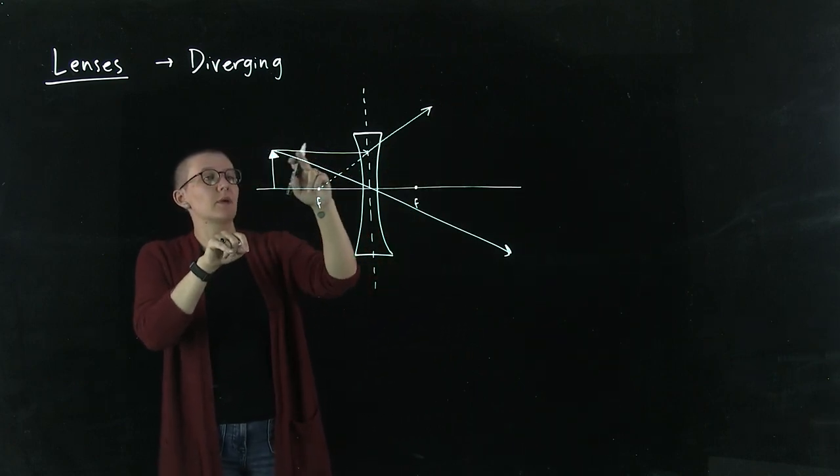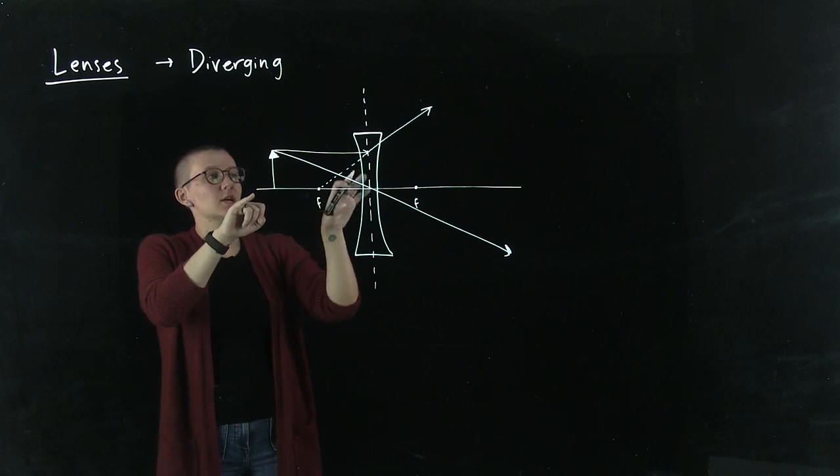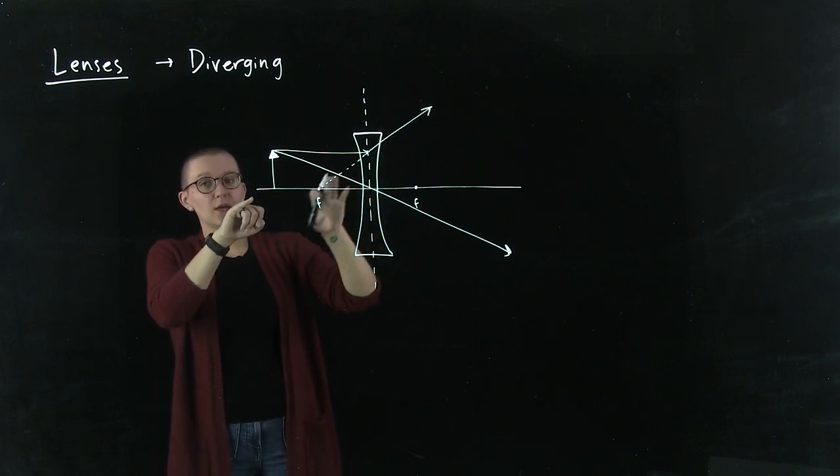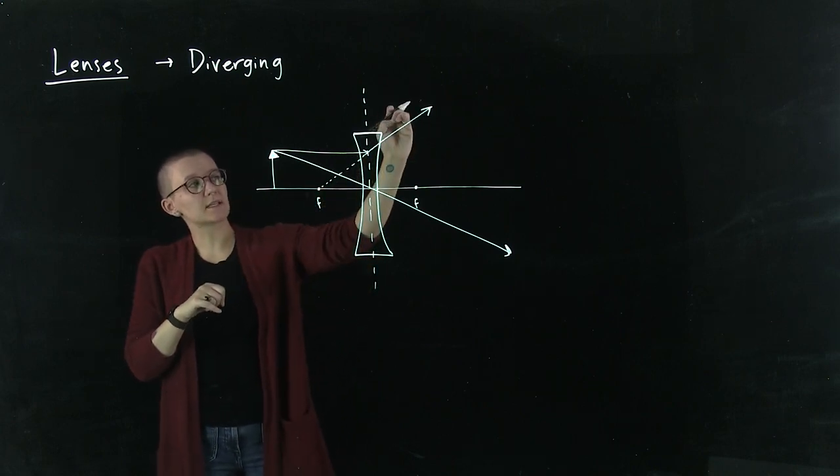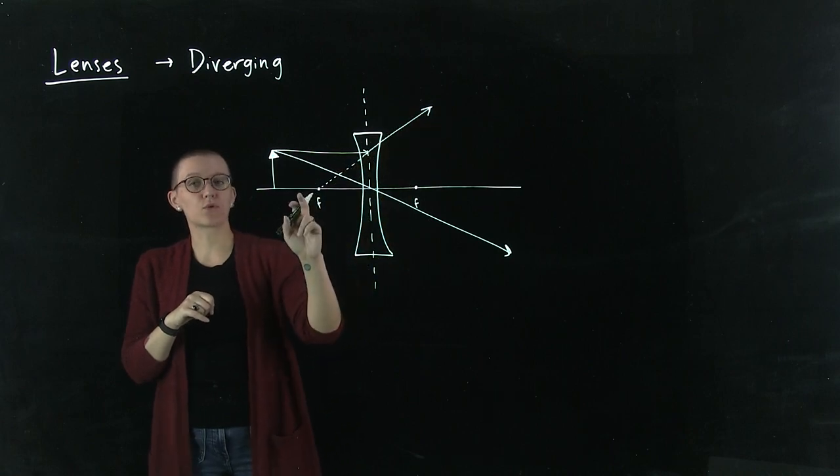This light ray coming parallel to the optical axis will be refracted at an angle so that when you extend this light ray, it will go through the focal point.